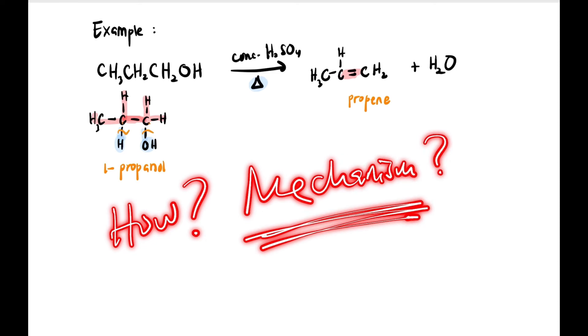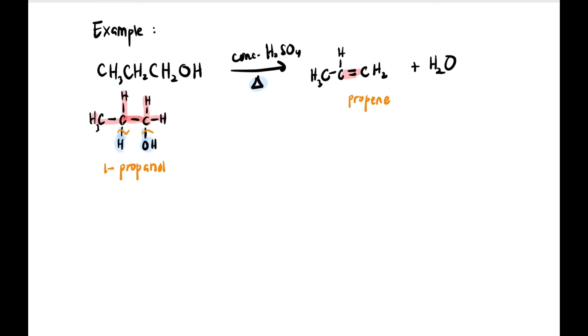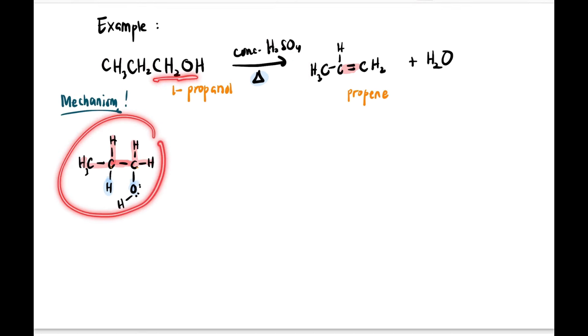The more important question is how does this happen - what is the mechanism? For the mechanism, it is better if we expand the structure. The OH, we show it properly - O has 2 lone pairs with H. And then for H2SO4, we write it as HOSO3H.